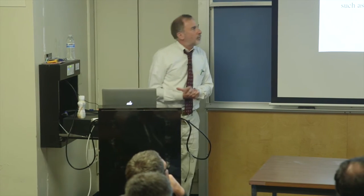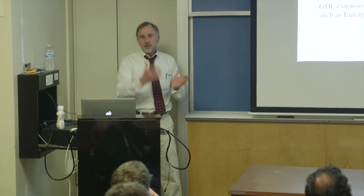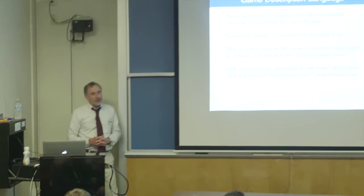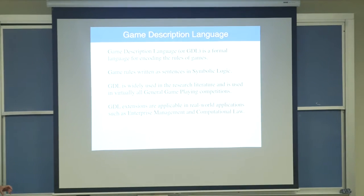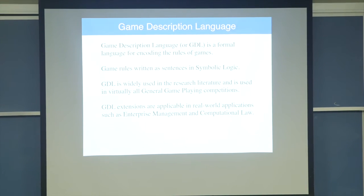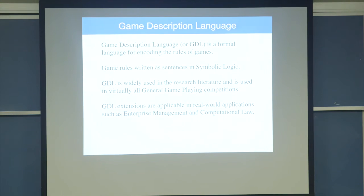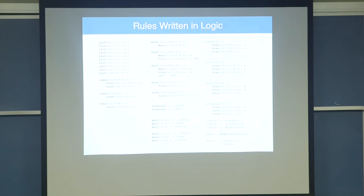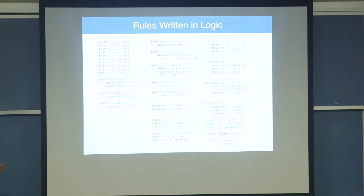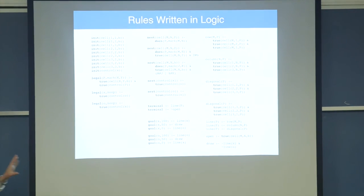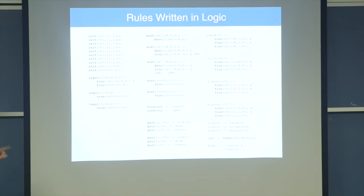If you think about how long it would take to transmit the graph to the game player, we would be here for centuries, and besides nobody has enough memory to store it. There's no way we can actually take that graph and ship it to the players. So we have to find a compact description of the game rules. What's been done - partly what made this whole field go - was the invention of a so-called Game Description Language, a formal language based on logic which allows us to codify the rules in a compact form and ship those rules to the players in a relatively small amount of space.